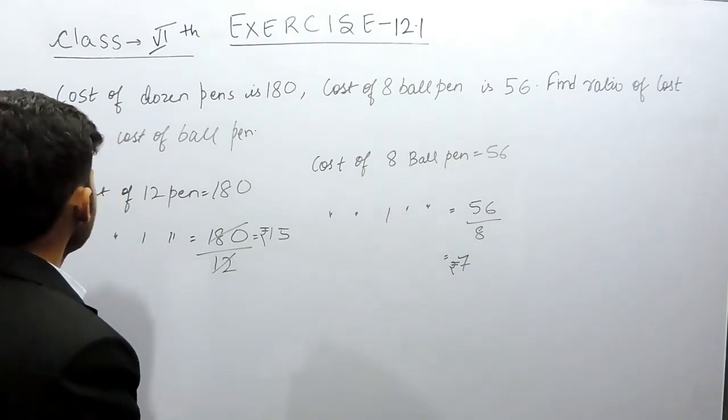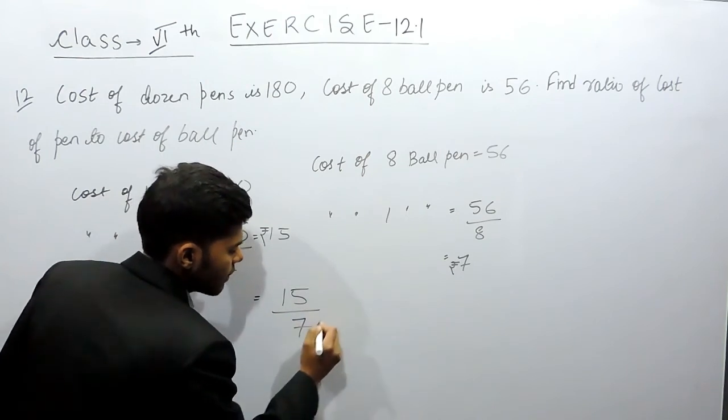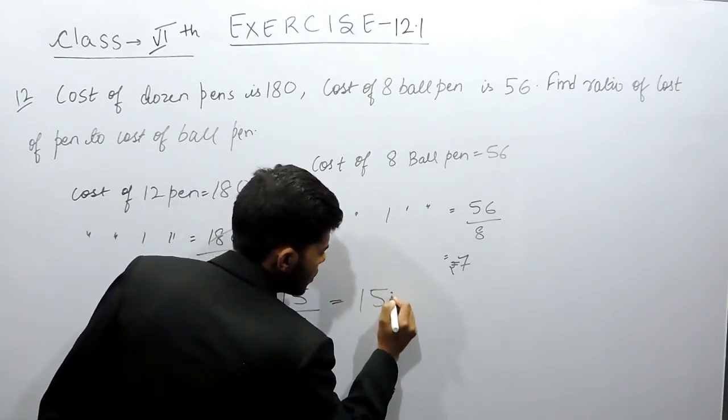Now we can find the ratio. Ratio of pen, that means 15, by ratio of ball pen, that is 7, or we can say that 15 ratio 7.